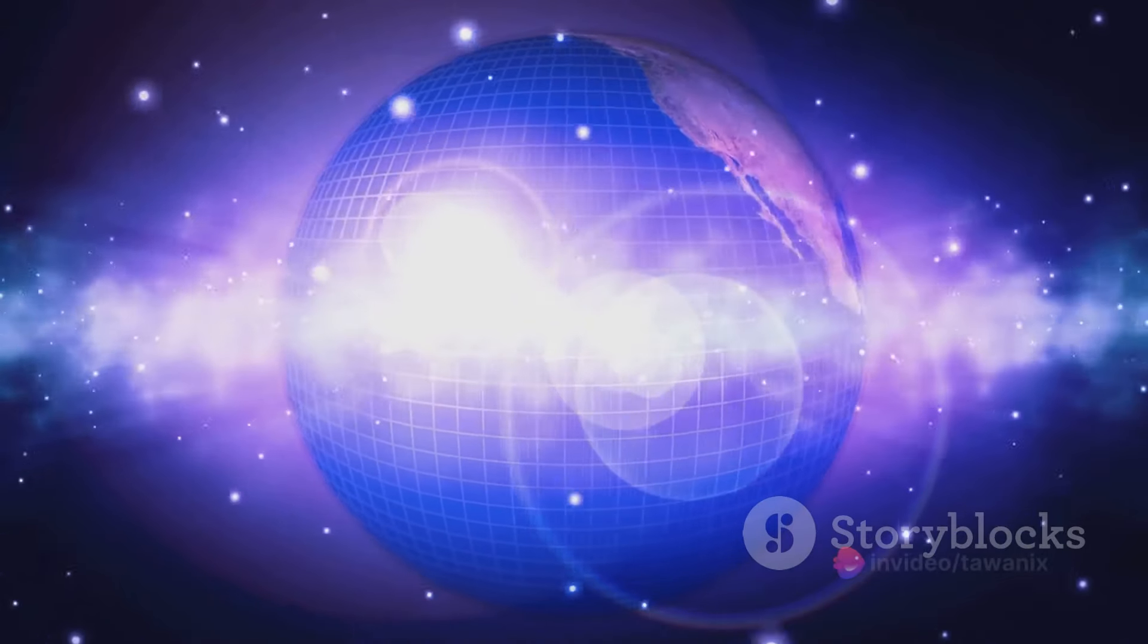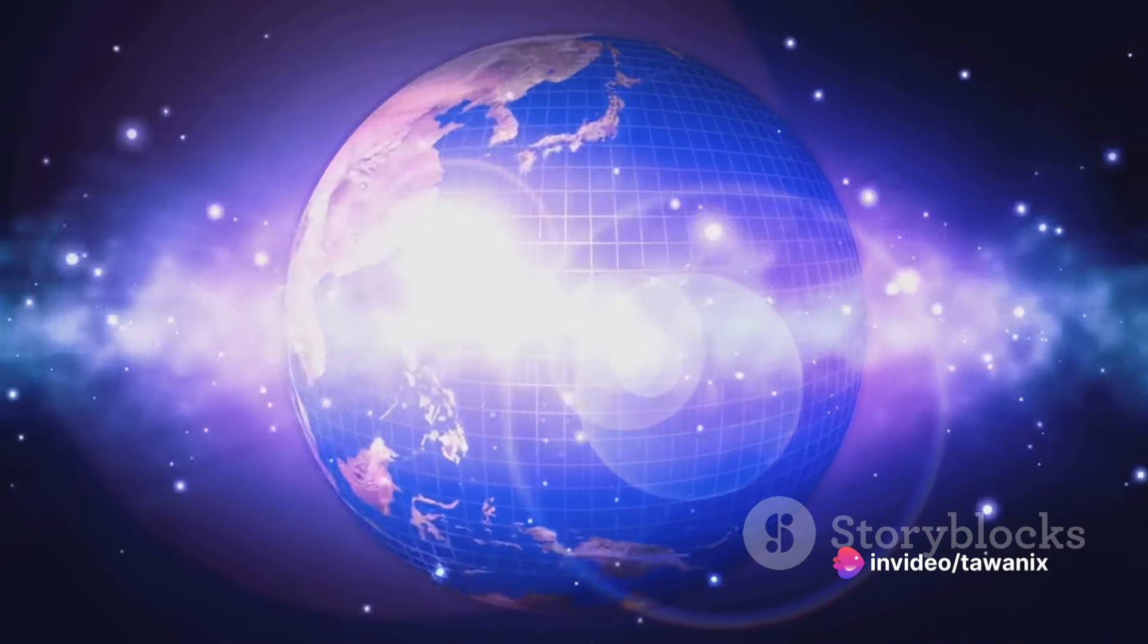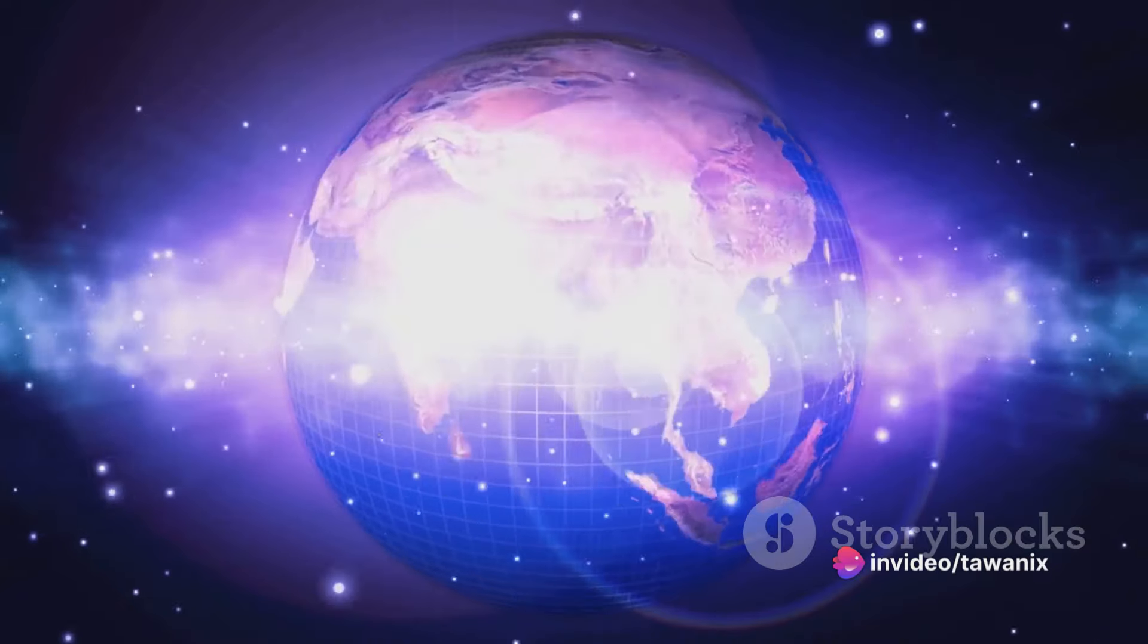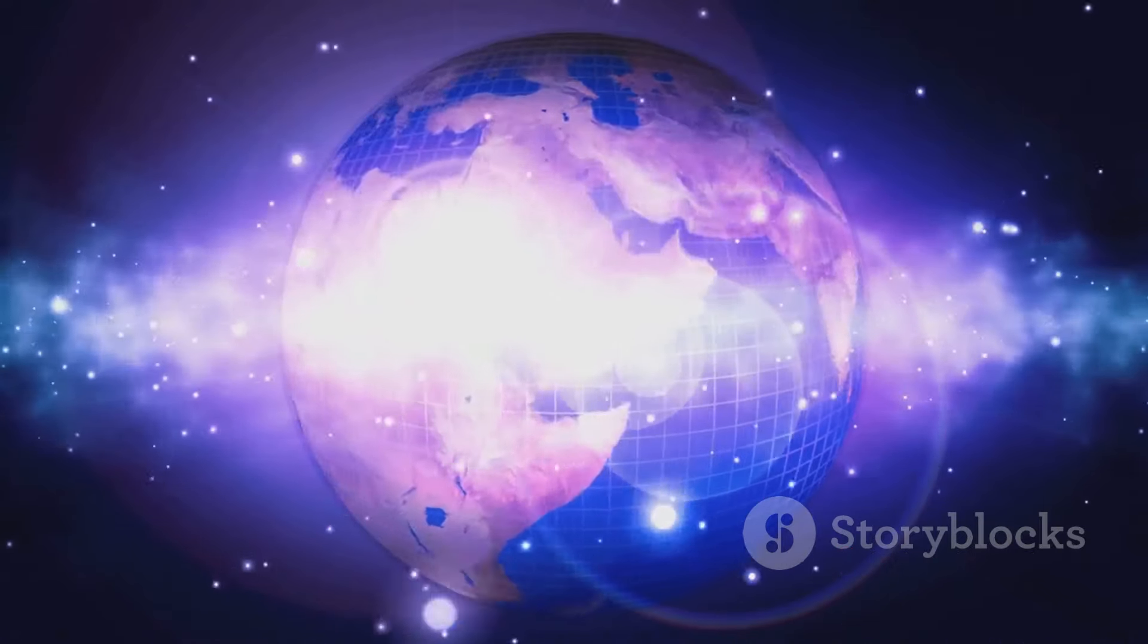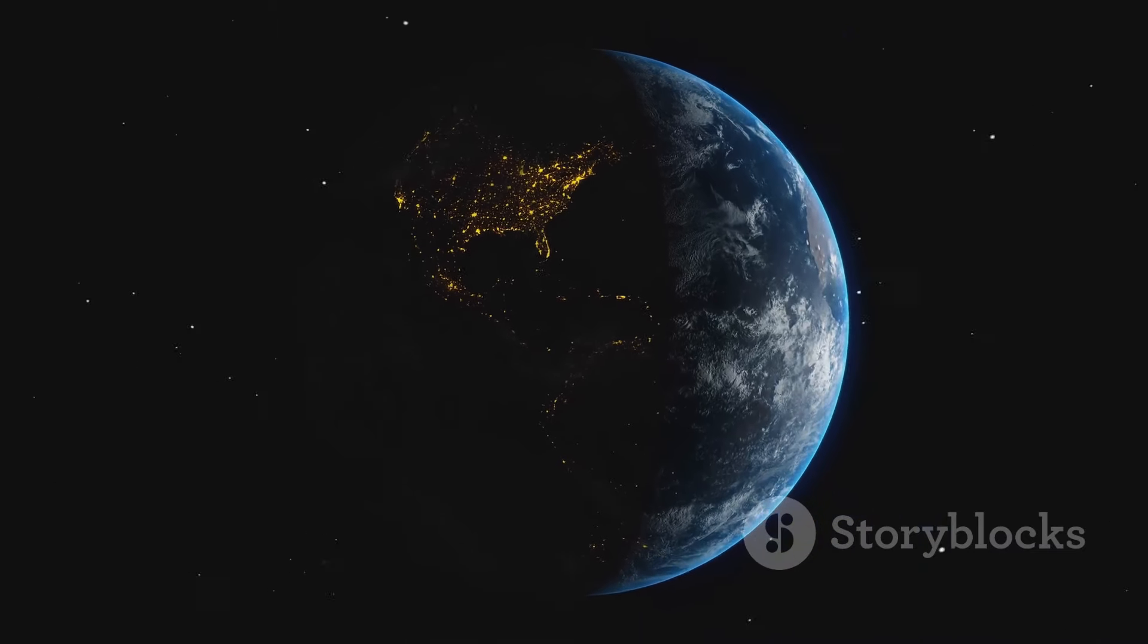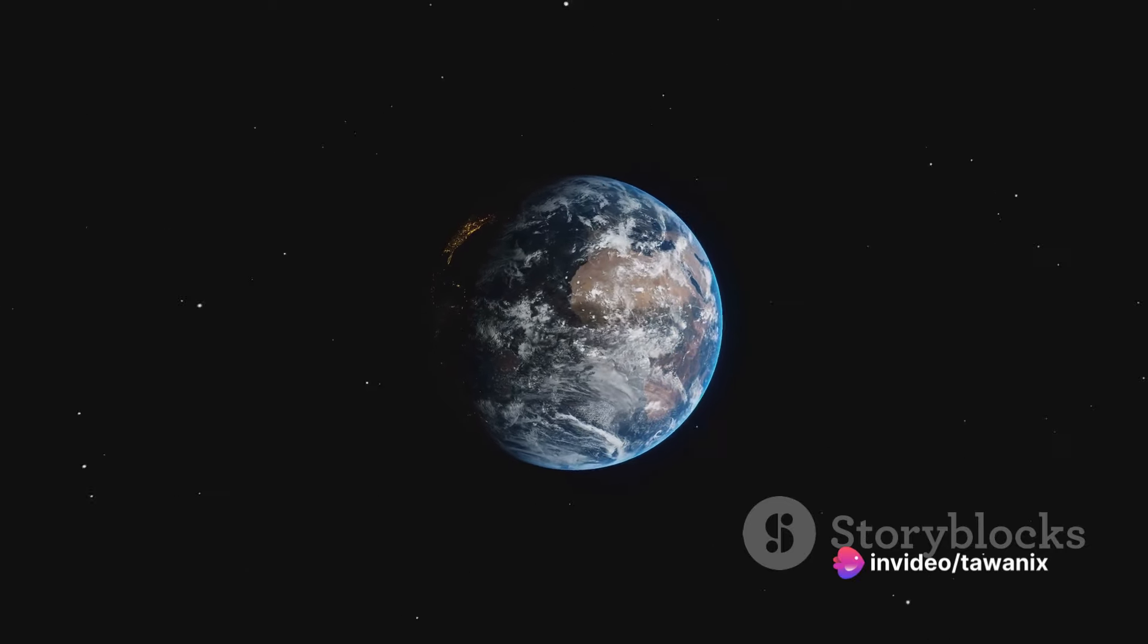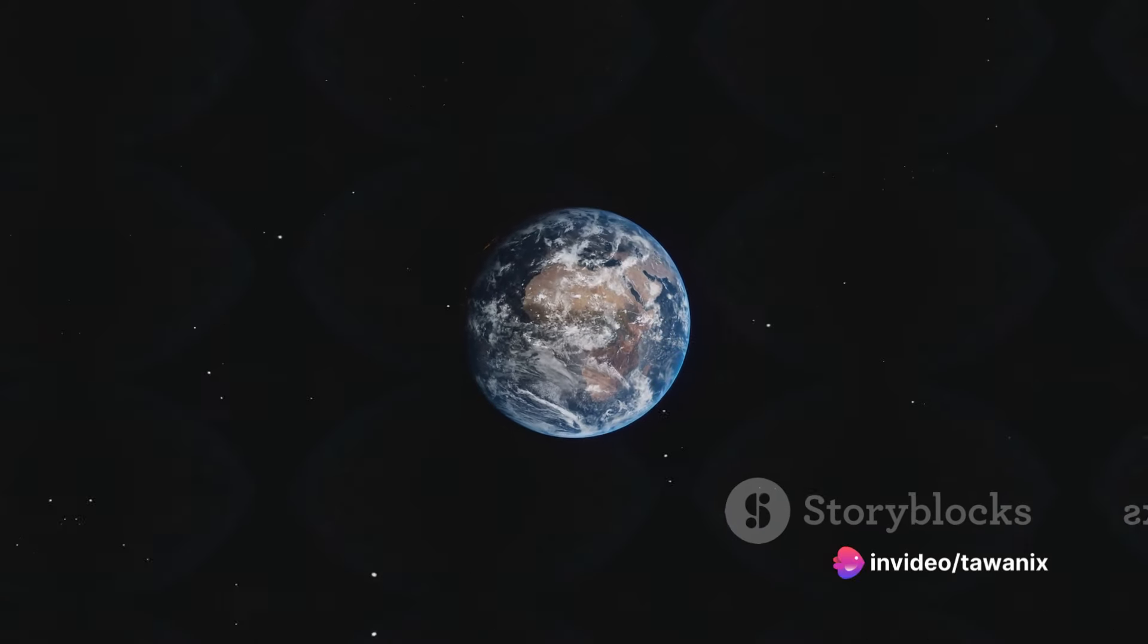So the next time you picture Earth, don't imagine a perfect sphere. Picture a cosmic pear, spinning in space, subtly stretched by its ceaseless rotation. This cosmic pear shape is a fingerprint of its rotation, like a spinning ball of clay stretching outwards. It's a testament to the intricate dance of forces that shape our planet and our lives every single day.